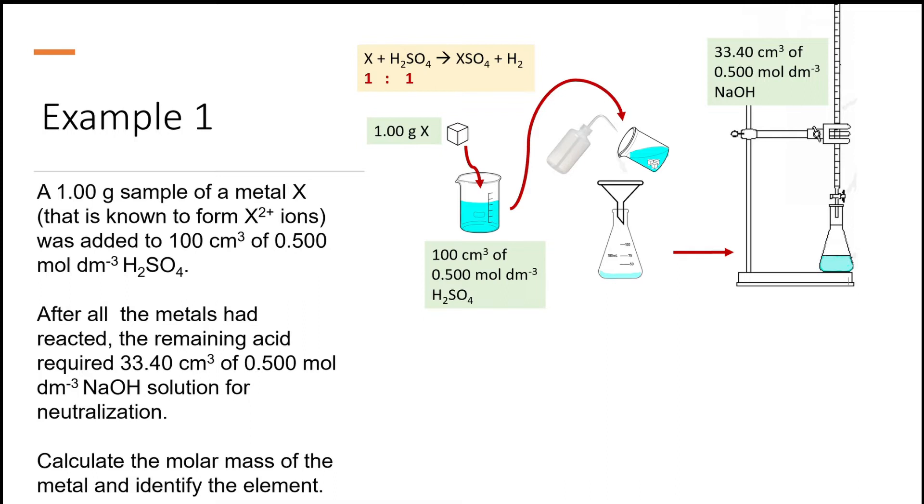33.4 ml of 0.5 molar sodium hydroxide solution for neutralization. The reaction equation is this and the molar ratio between sulfuric acid and sodium hydroxide is 1:2. Calculate the molar mass of the metal and identify the element.